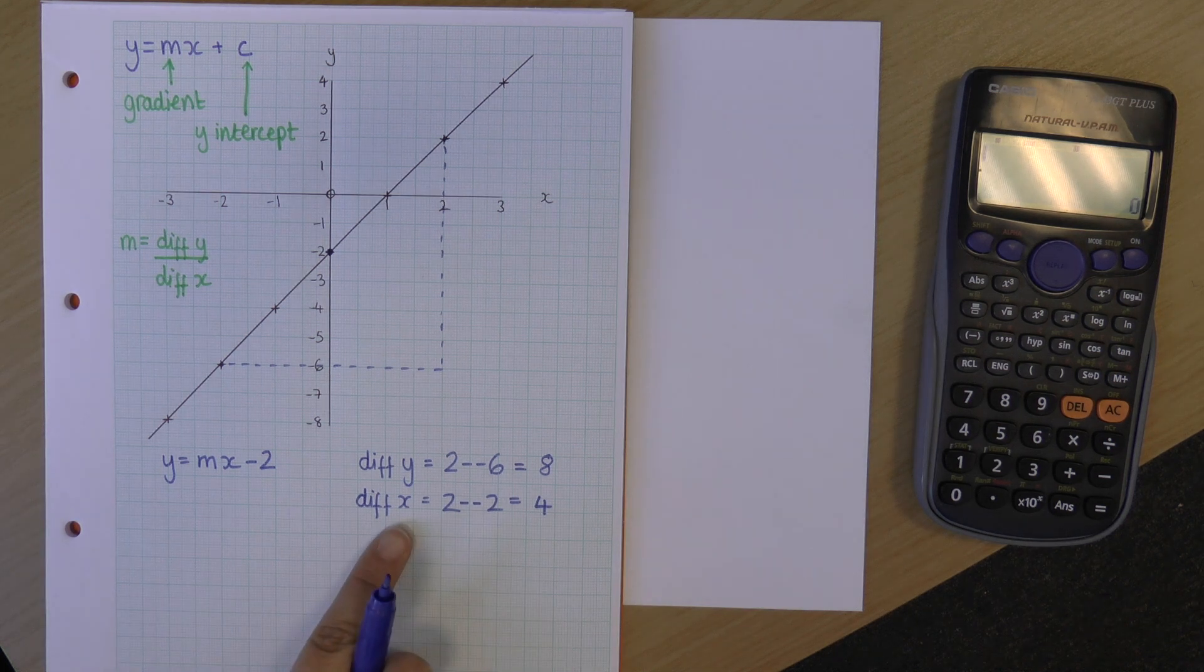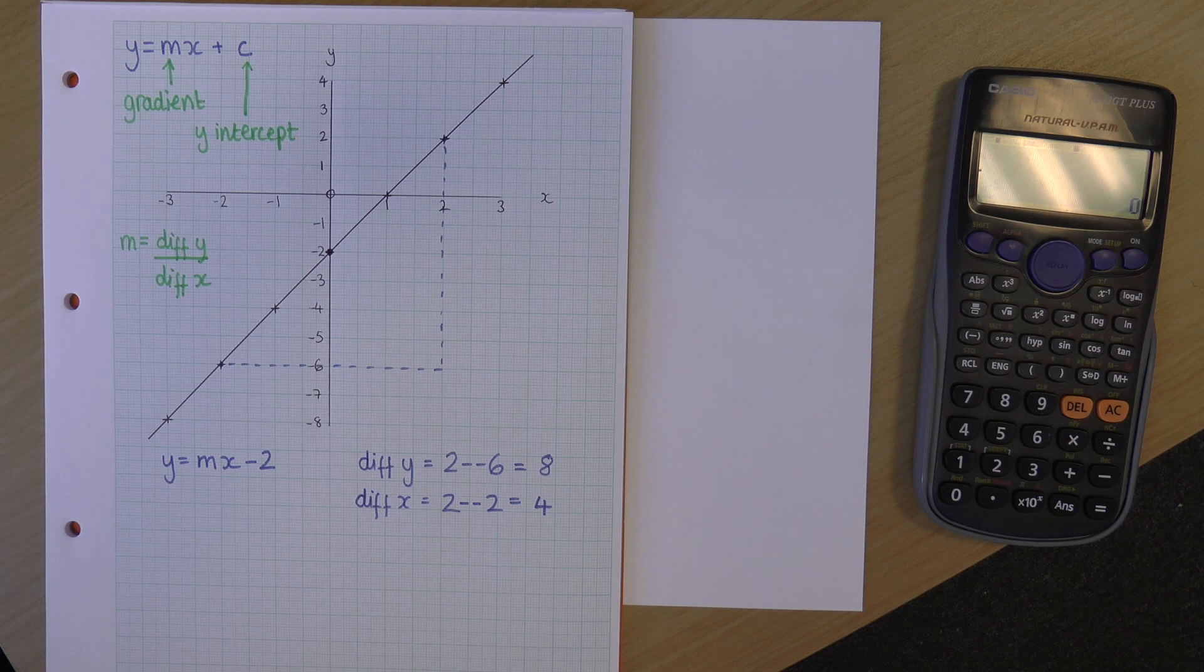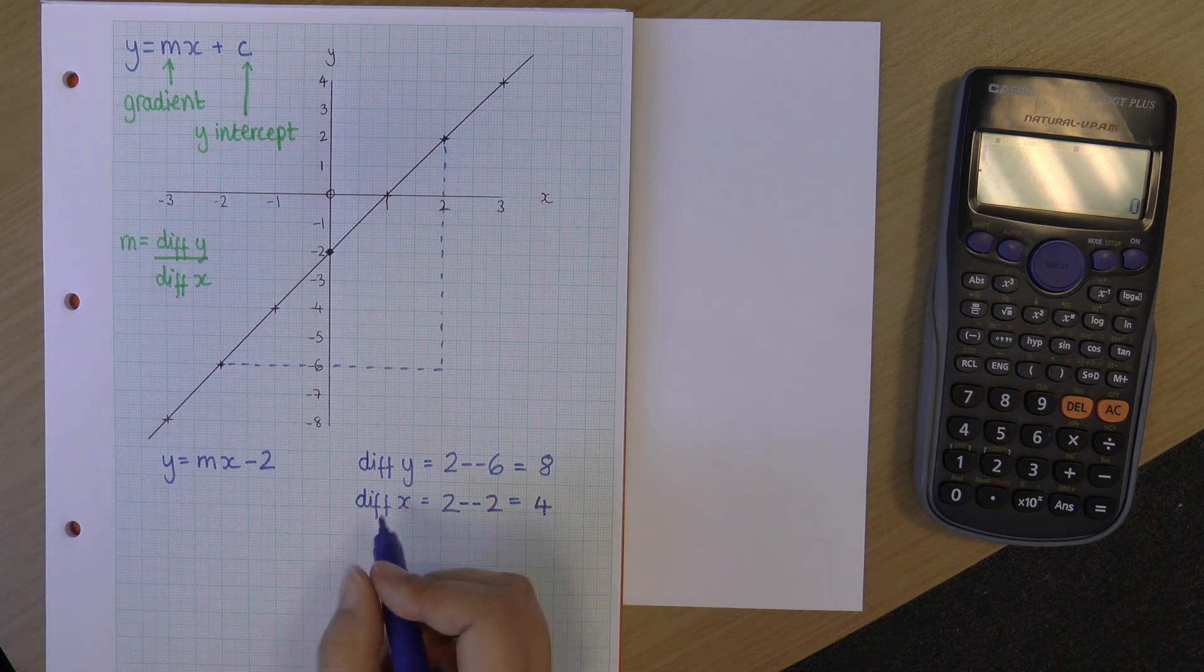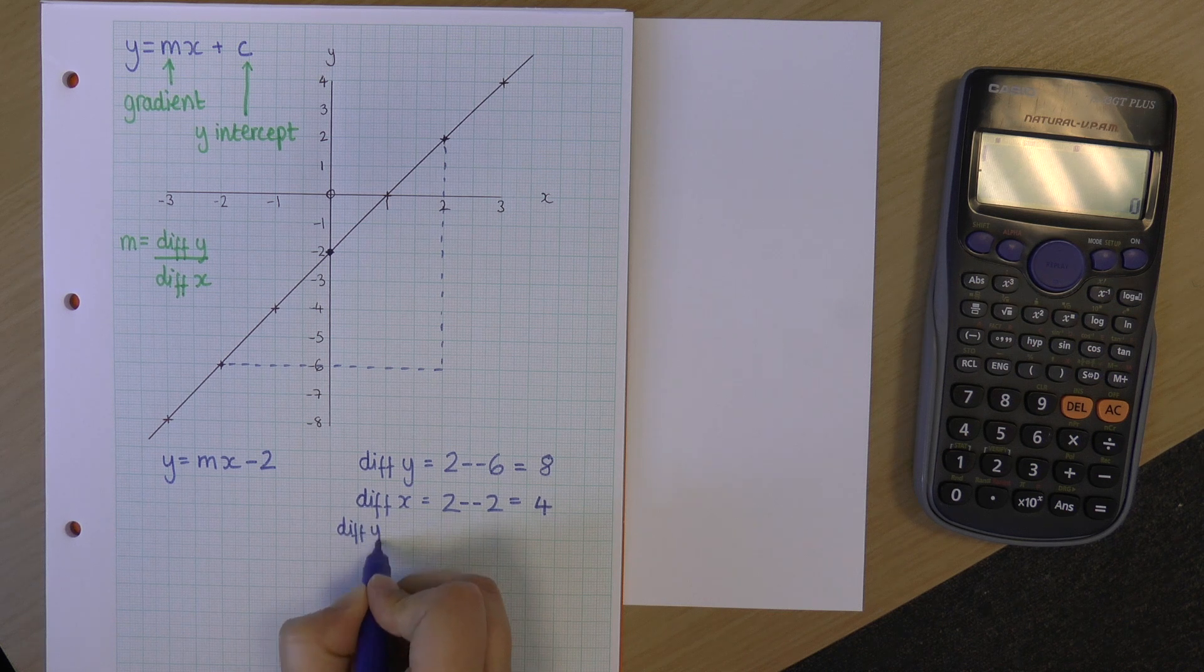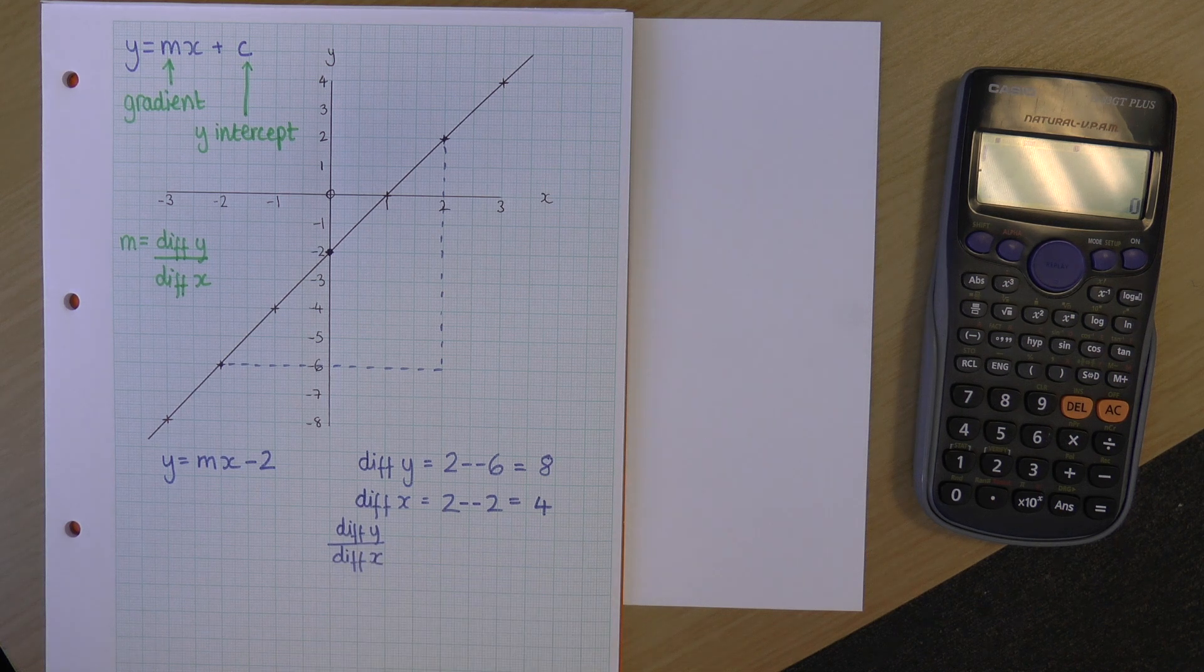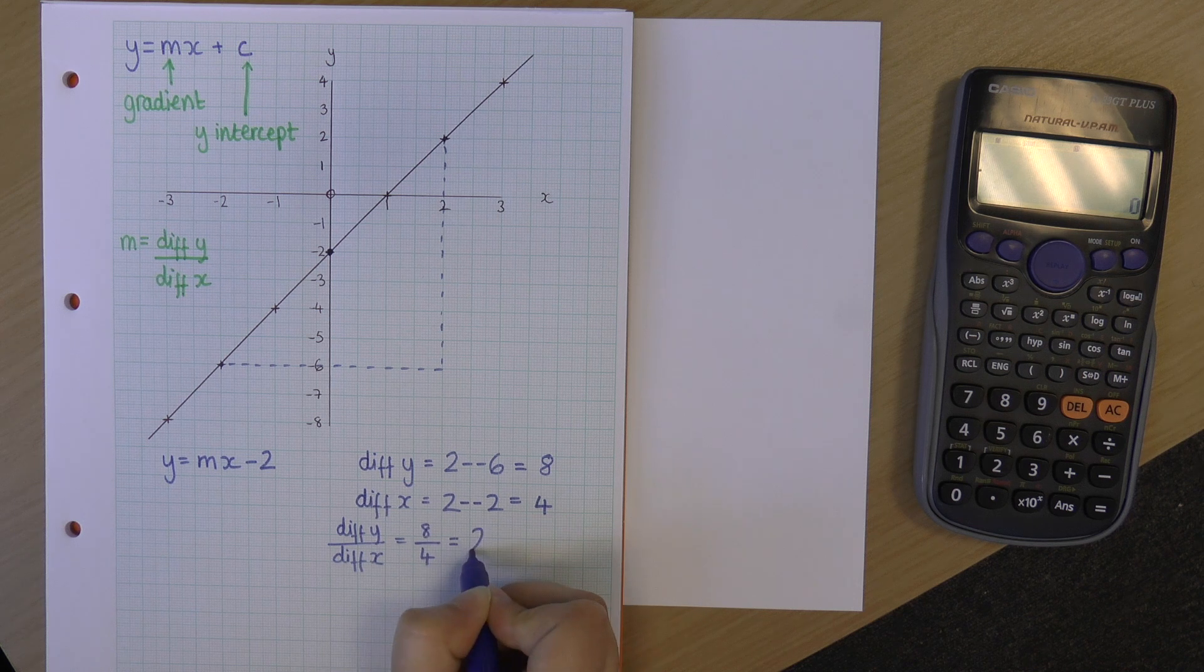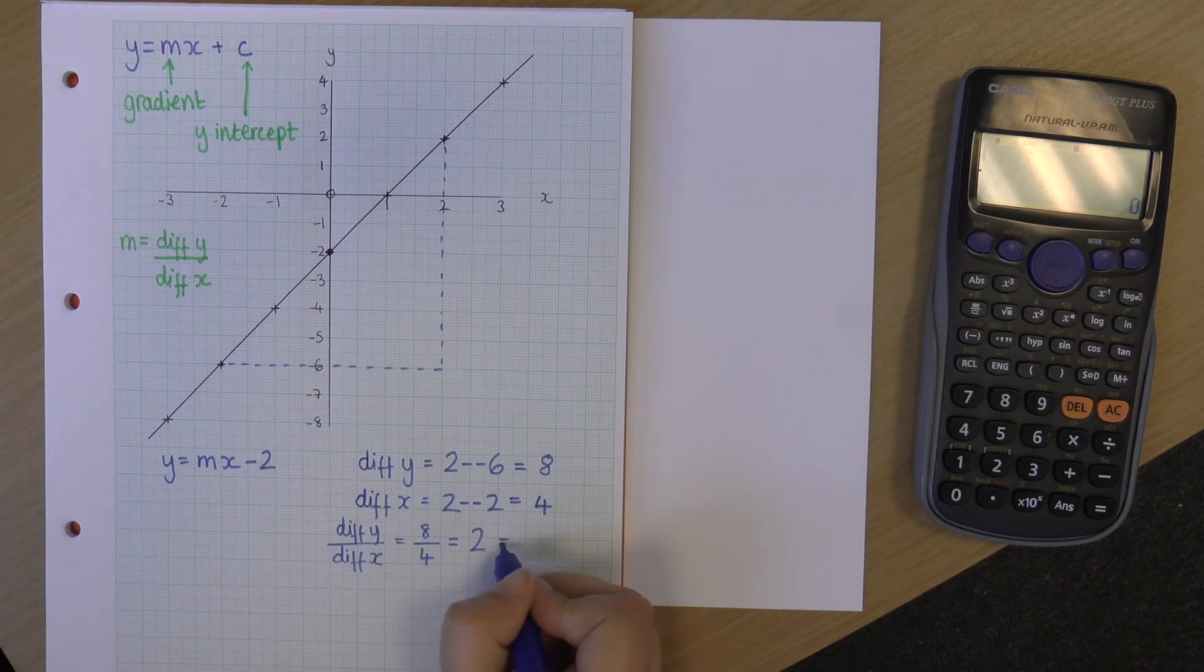So, I now have my difference in y and my difference in x. So, now I just need to calculate what the difference in y divided by difference in x is. So, difference in y divided by difference in x is 8 divided by 4, which is 2. And that is my gradient. That is my m.